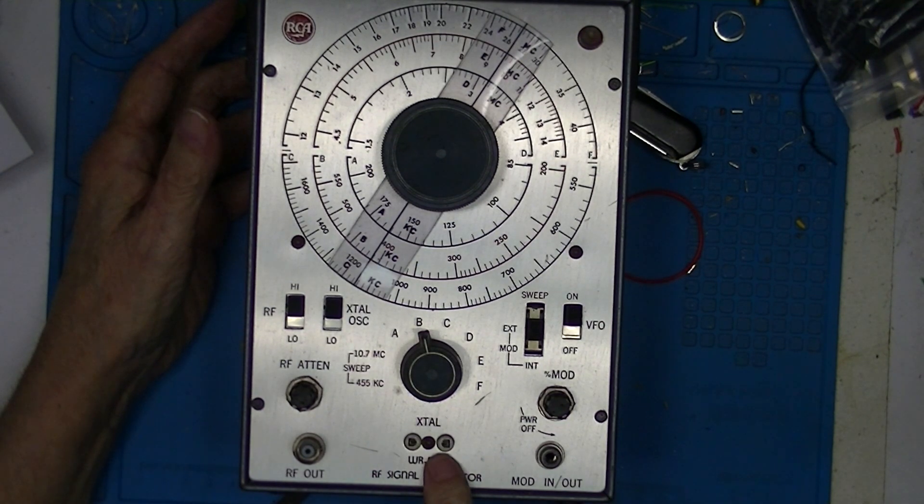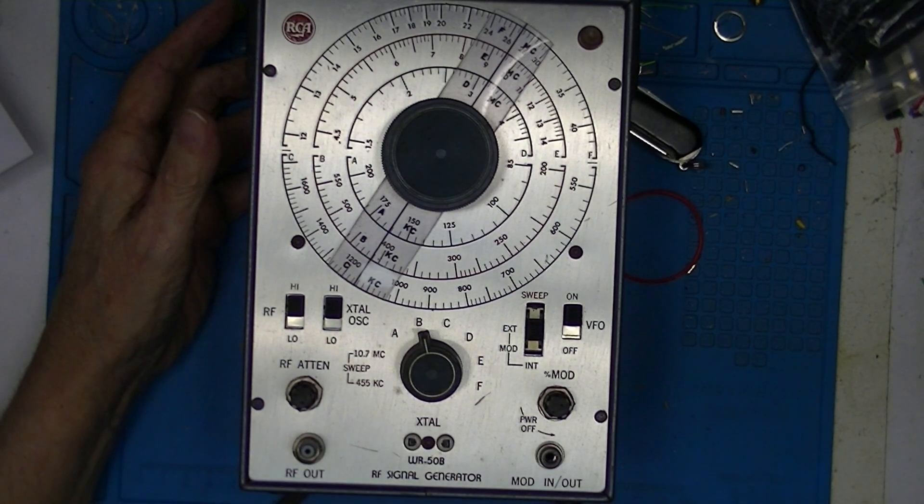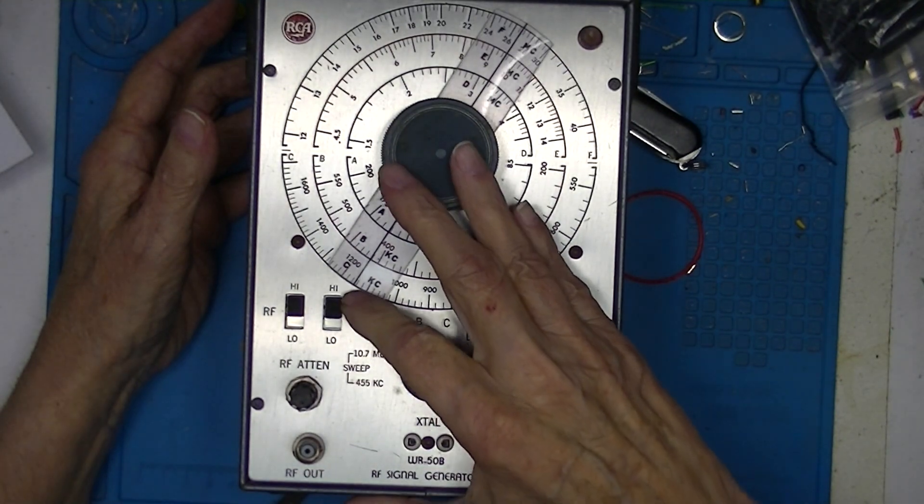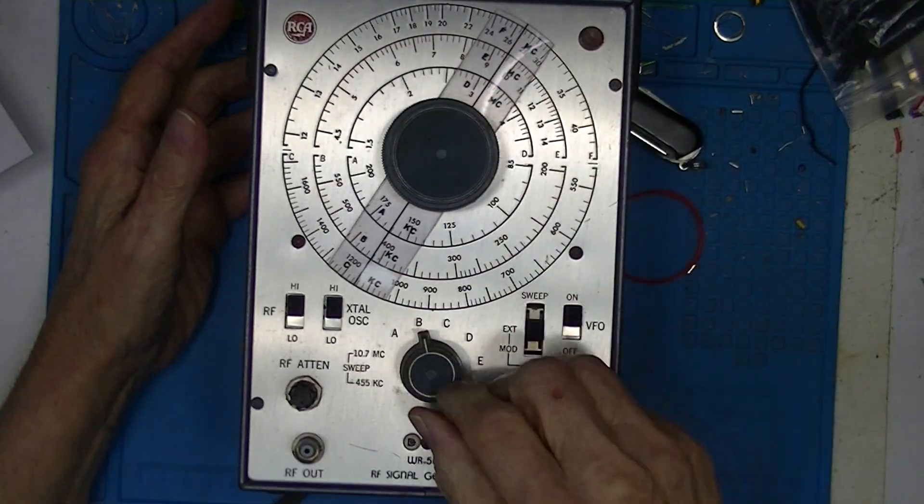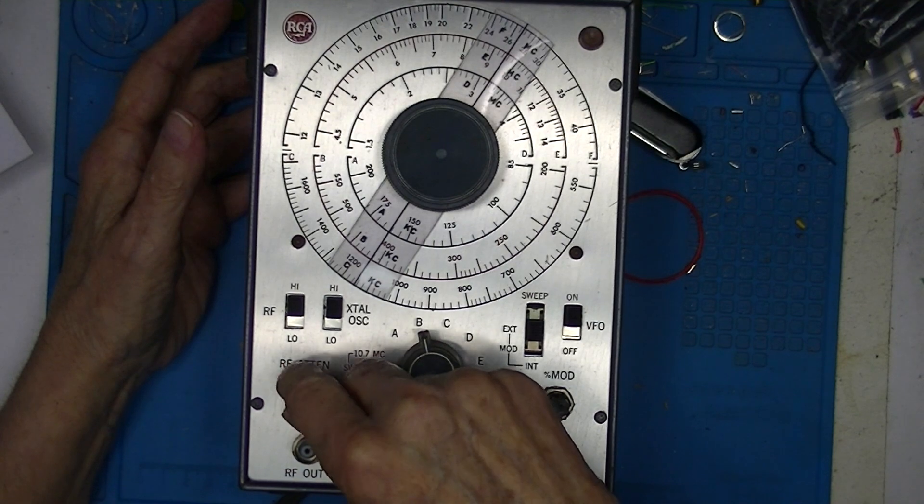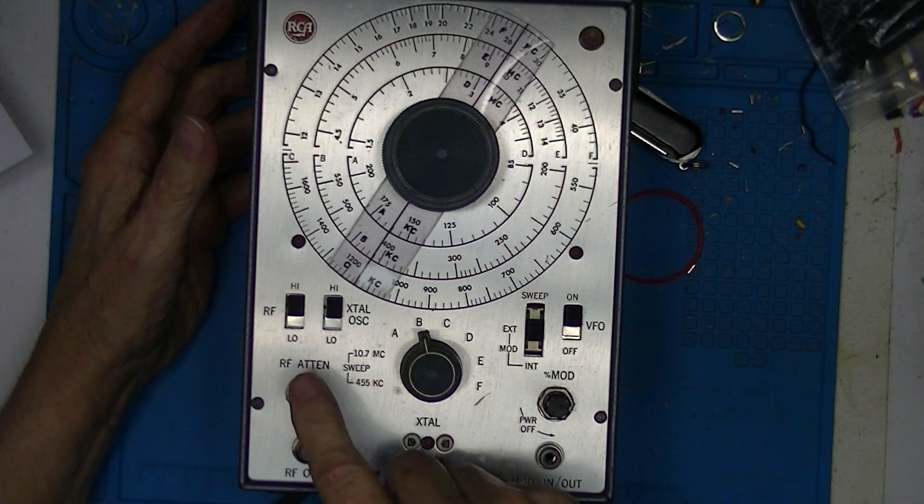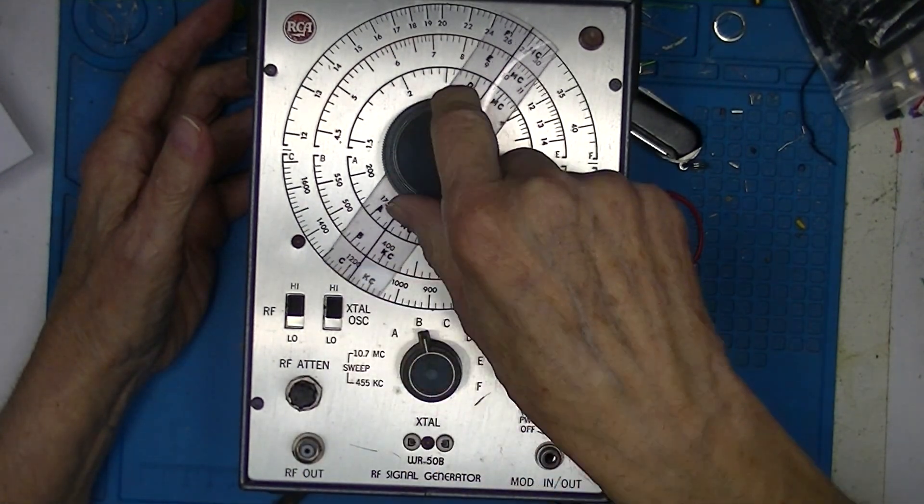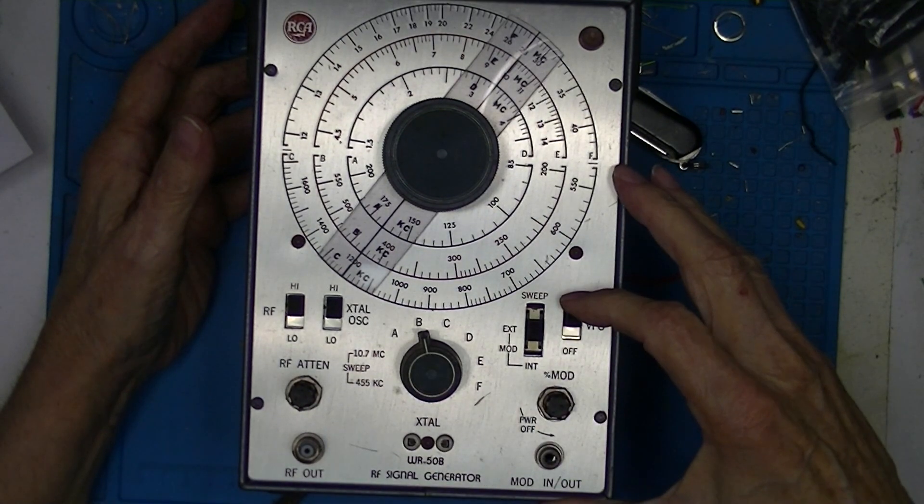There's no volts, no dB, just RF output. There is provision on the front here to plug in a quartz crystal. The crystal will oscillate at its fundamental frequency and the output will appear here. We can turn the output of the crystal oscillator high or low and then attenuate the crystal oscillator output. If we don't want both the VFO and the crystal to be here, we can turn the VFO off.